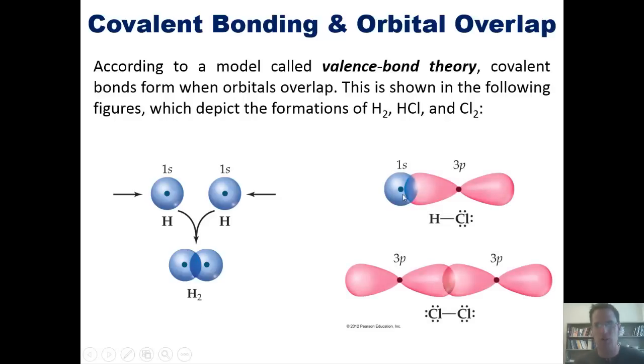Similarly, HCl forms when hydrogen, a single atom of hydrogen, takes its atomic orbital, its 1s orbital, and chlorine takes one of its 3p orbitals, and then they overlap. And that forms a new molecular orbital that's formed by these two atomic orbitals merging.